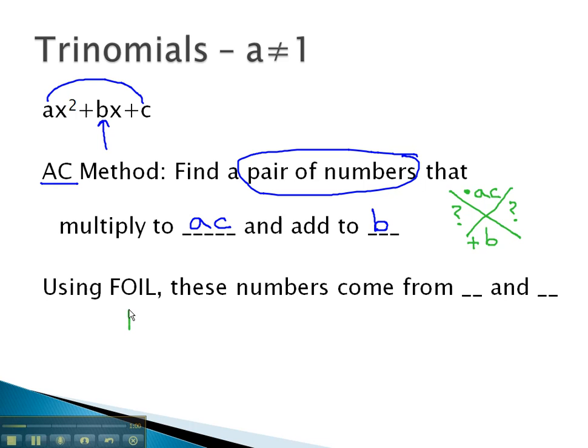These will help us factor, because using FOIL, these numbers will come from the o and the i, or the outside and inside.